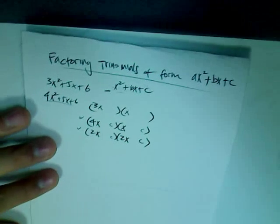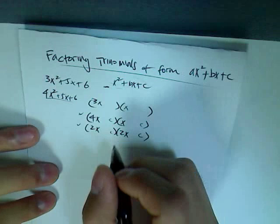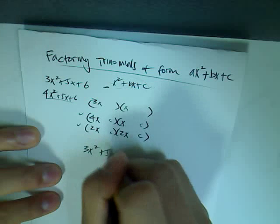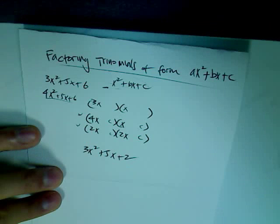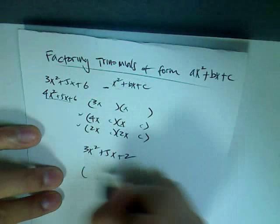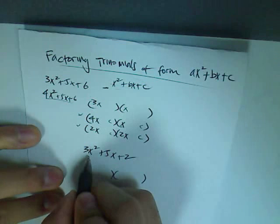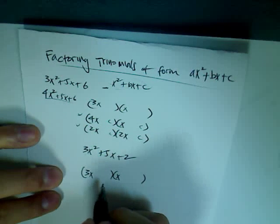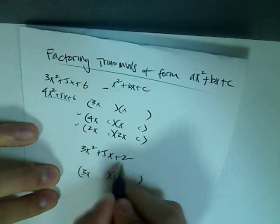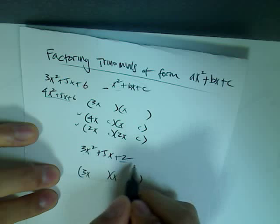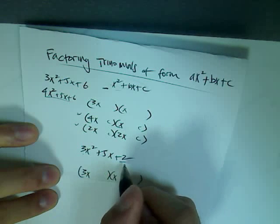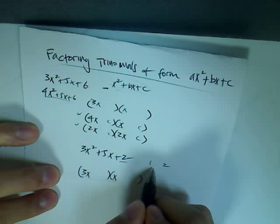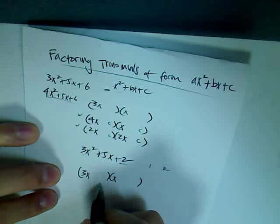Let's try an example problem together. Given 3x squared plus 5x plus 2, we start with two parentheses. The only possible combination for 3x squared is a 3x and an x. Since the last number is 2, the only combinations for 2 are 1 and 2. So the process is figuring out where to put the 2 and where to put the 1.